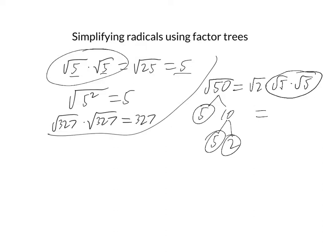Whoops. Let's try that again. It's just 5 times the square root of 2. And so that is how you can use a factor tree method for simplifying radicals.